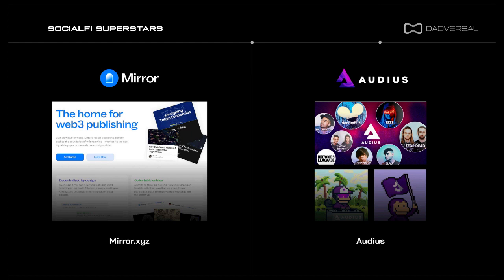Audius utilizes blockchain technology and a decentralized file system called ALTSP, based on IPFS, to store music files. Artists can run their own content nodes or let Audius choose nodes for them. Node operators can earn audio tokens by registering their nodes with an active stake. Artists can also earn audio tokens by tracking popularity or by verifying social media accounts and uploading content. Audio token holders have voting rights in Audius's governance protocol, influencing platform development and decision making.